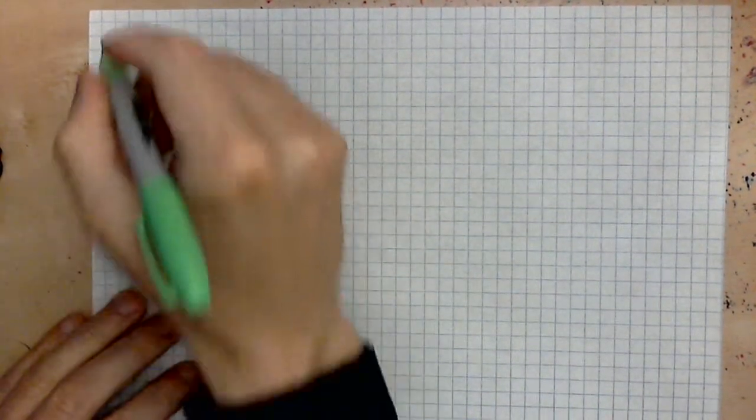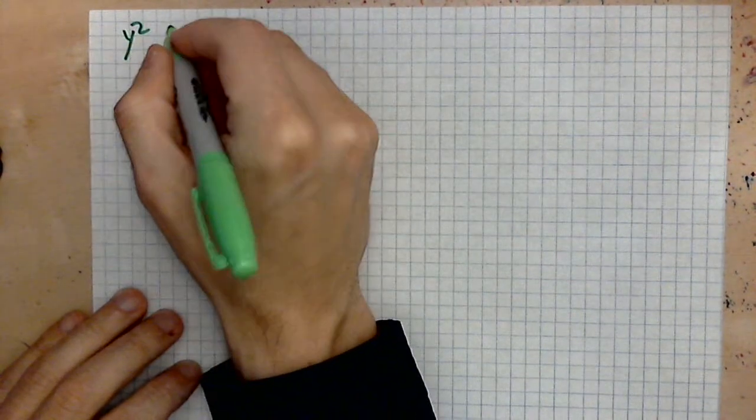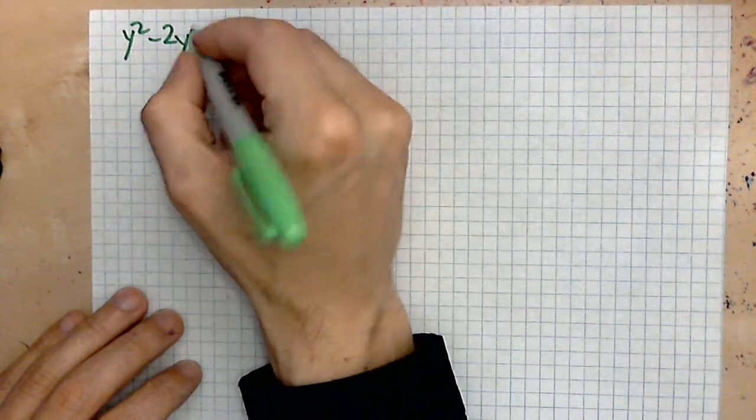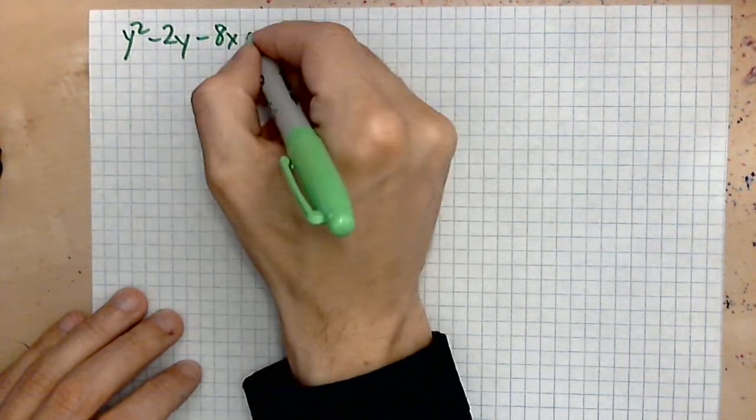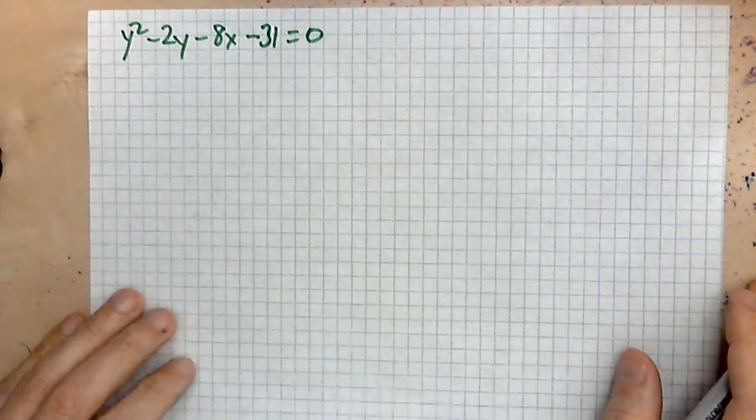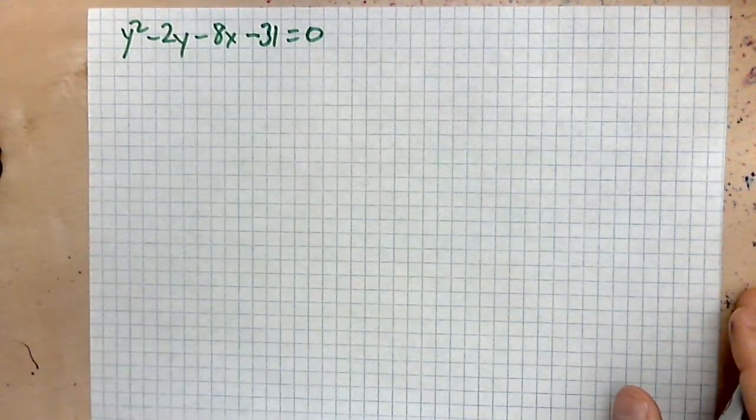Let's take a look. This is what we are given: y squared minus 2y minus 8x minus 31 equals 0. The objective is to begin with the equation in this form and transform it.